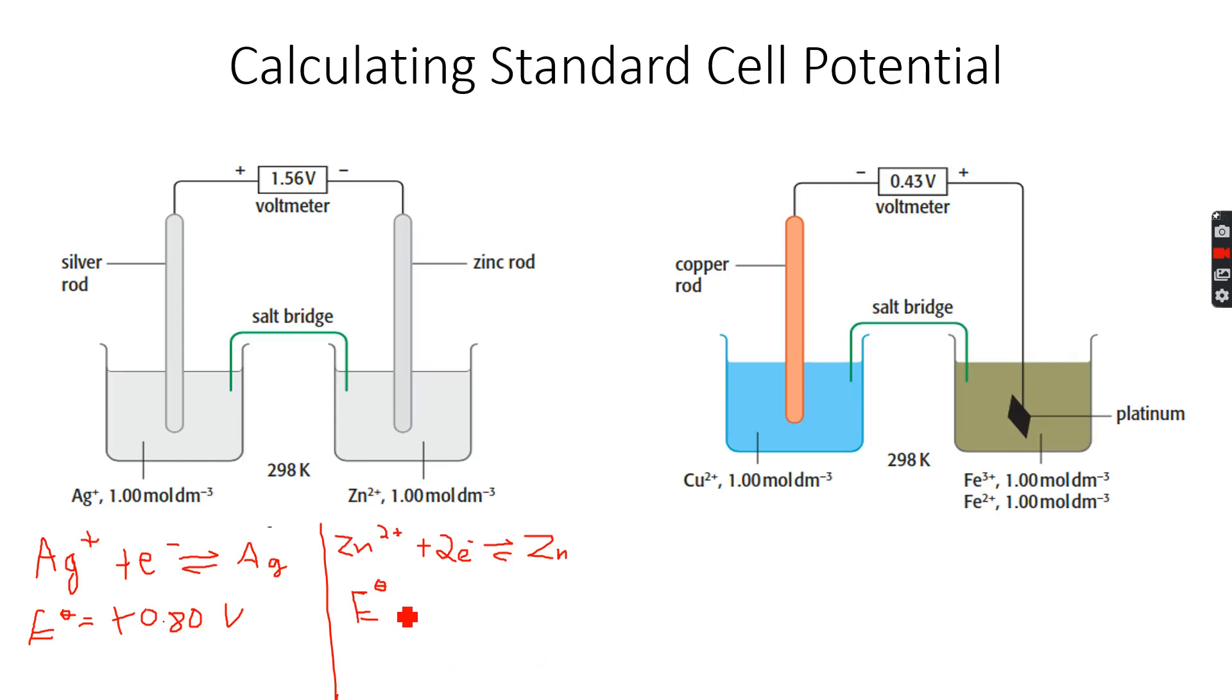This has an E° value of minus 0.76 volts. Now we know that since this is negative, the E° for the zinc cell is lower than the E° for the silver cell, because this is positive and this is negative. So we will have to invert the negative part.